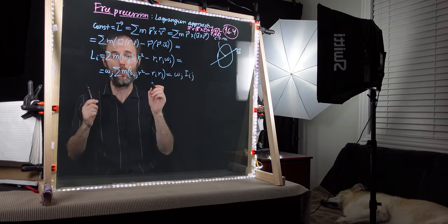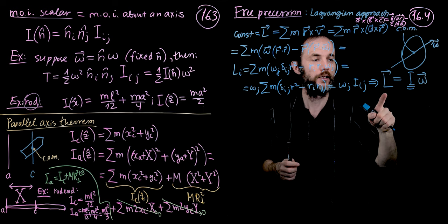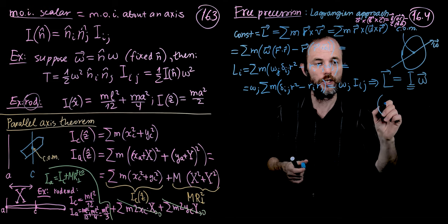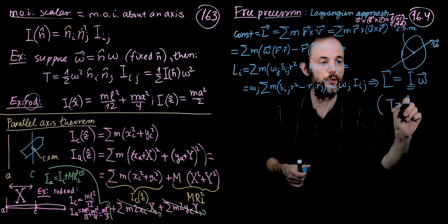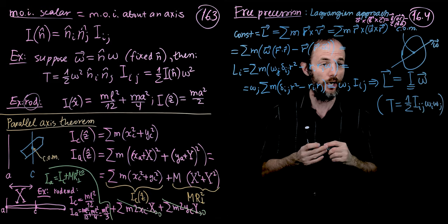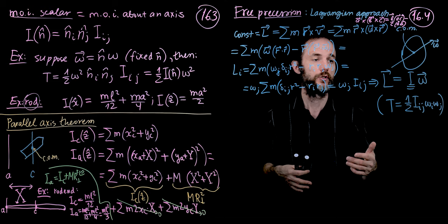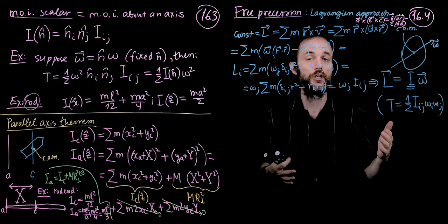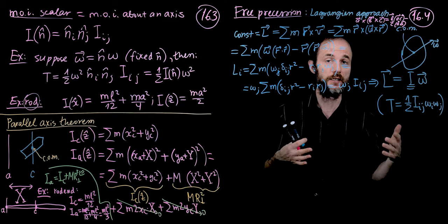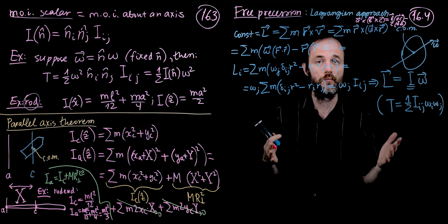Therefore, the moment of inertia tensor determines the angular momentum: L equals I times omega. For kinetic energy we had one-half I_ij omega_i omega_j. The moment of inertia tensor plays a role similar to mass for linear motion — our momentum p was m times v and kinetic energy was one-half m v squared. Here we replace the scalar mass with the tensor moment of inertia, and linear velocity with angular velocity.